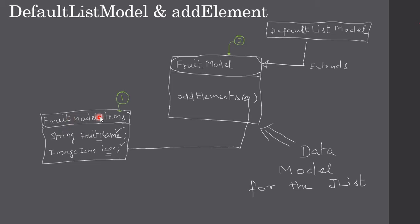In the previous video we talked about the FruitModelItem class, which will supply data for each list item. Then we created a FruitModel — this FruitModel is constructed based on FruitModelItem instances. FruitModel will contain one or more instances of FruitModelItem. This FruitModel acts as a data model for our JList, extending DefaultListModel and supplying data to our JList.